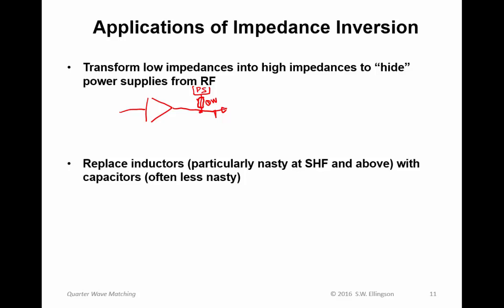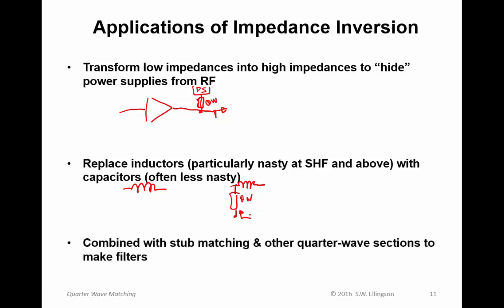Another application is to replace inductors, which are particularly nasty at SHF and above, with capacitors. So, one thing you can do is you can have, if you need an inductance, what you can do instead is take that inductor and run it through a quarter wave line. And now this thing looks like a capacitor. A third application is you can combine quarter wave matches with stub matching and other quarter wave sections to make filters. Filters are devices which modify frequency response, not necessarily transforming the impedance. That will be a topic of a future lecture in a future chapter.